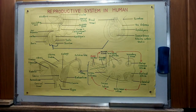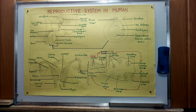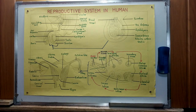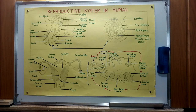Hi guys, welcome to our channel of Sciences and Mathematics. Our topic for discussion today is a complementary topic on the reproductive system in humans. We talked about one of the ways in which we produce a new offspring through the fusion of the male and female gametes. Having already looked at the male reproductive system, today we're going to look at the female reproductive system and its various parts.